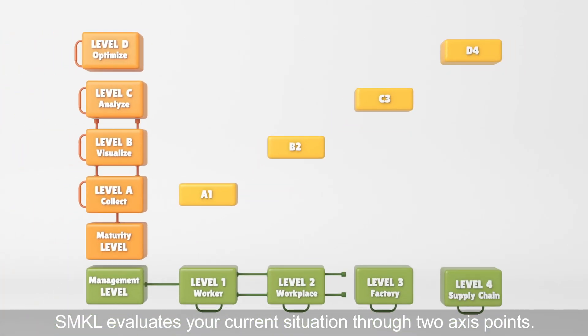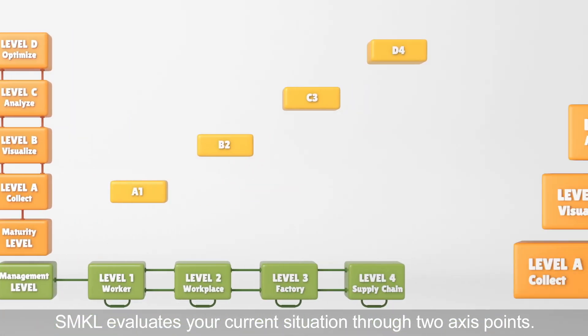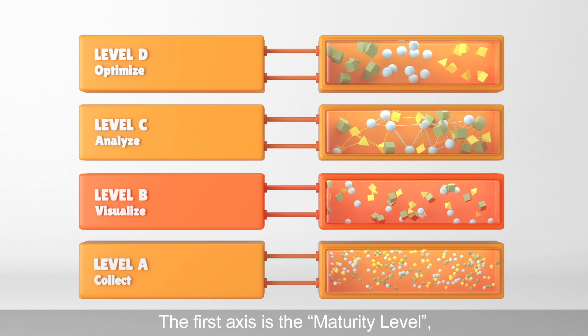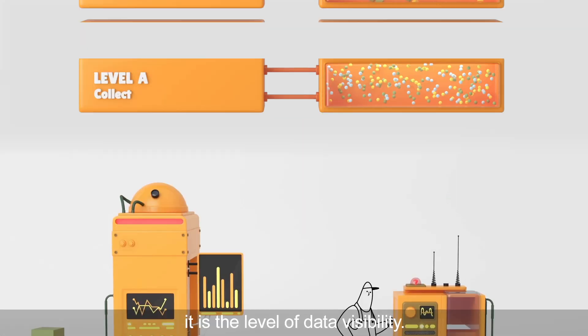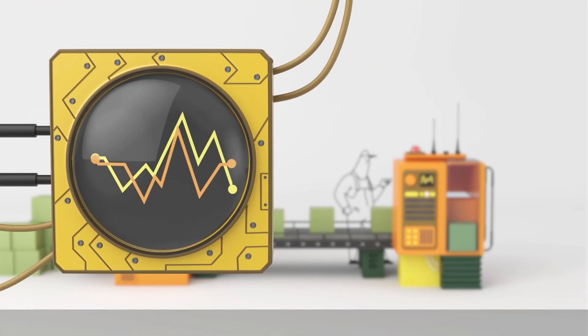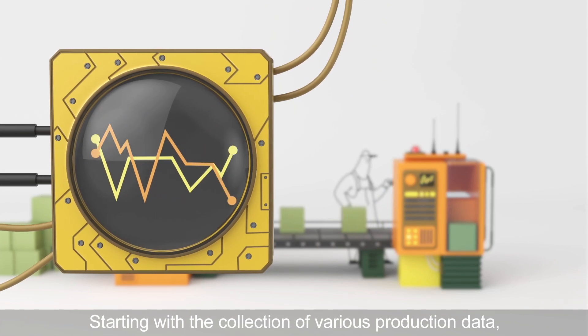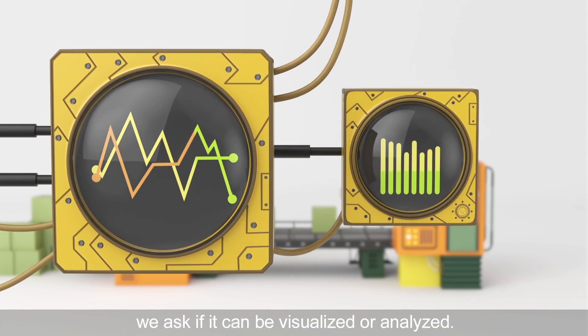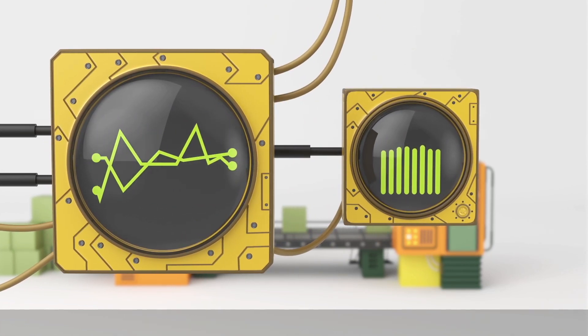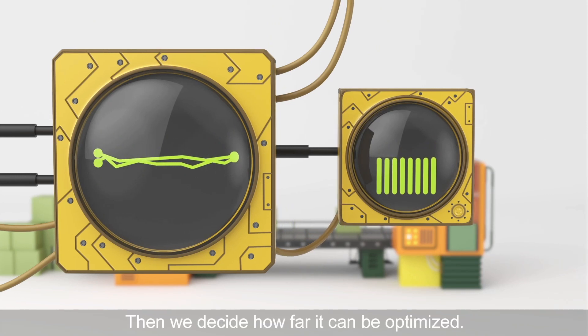SMKL evaluates your current situation through two axis points. The first axis is the maturity level - the level of data visibility. Starting with the collection of various production data, we ask if it can be visualized or analyzed. Then, we decide how far it can be optimized.